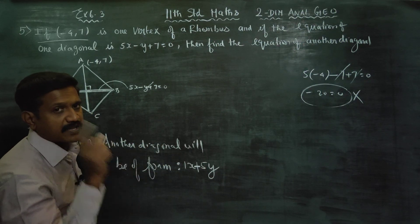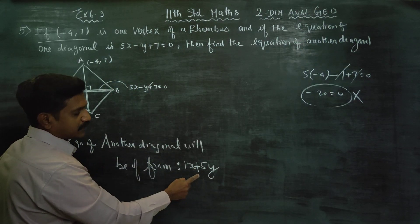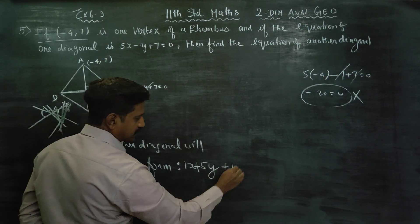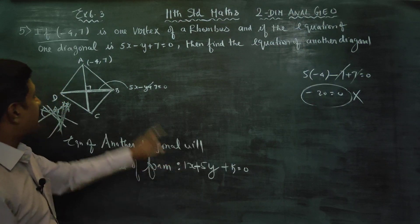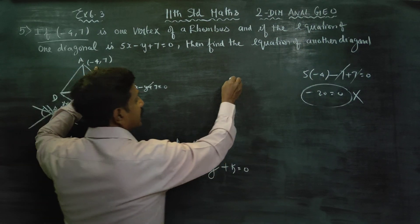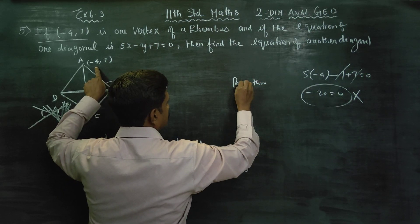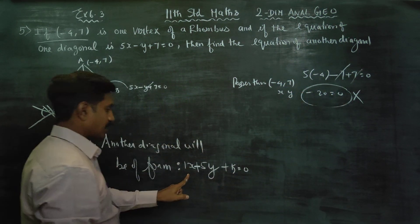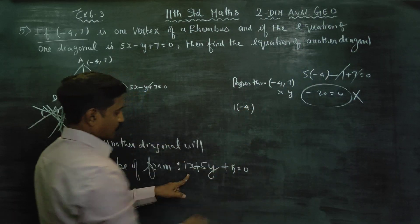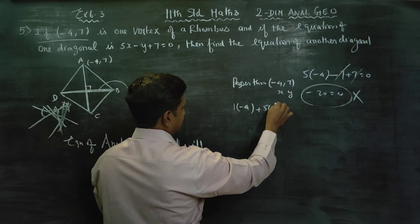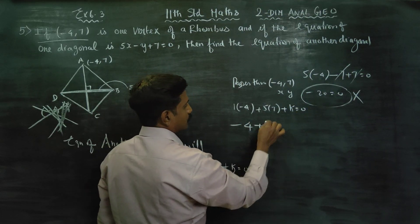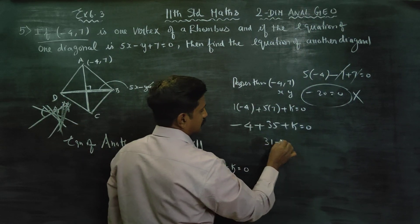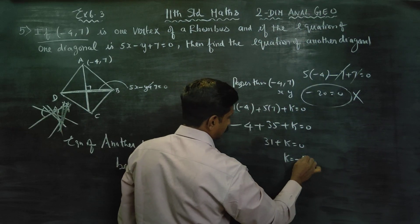The perpendicular line form gives us: x plus 5y plus k equals 0. The diagonal passes through minus 4, 7. Substituting: 1 times minus 4 plus 5 times 7 plus k equals 0, giving minus 4 plus 35 plus k equals 0, so 31 plus k equals 0, and k equals minus 31.